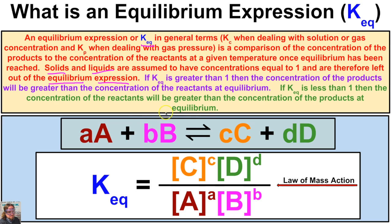Let's take a look at an example. We have a chemical equilibrium taking place, and we can tell this is at equilibrium because of the double arrow — one arrow going to the right and one to the left. The two reactants react to produce products, and those products also react to produce reactants, reaching a state of equilibrium.